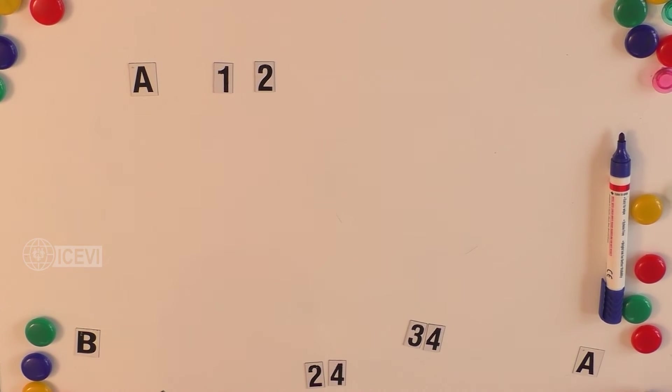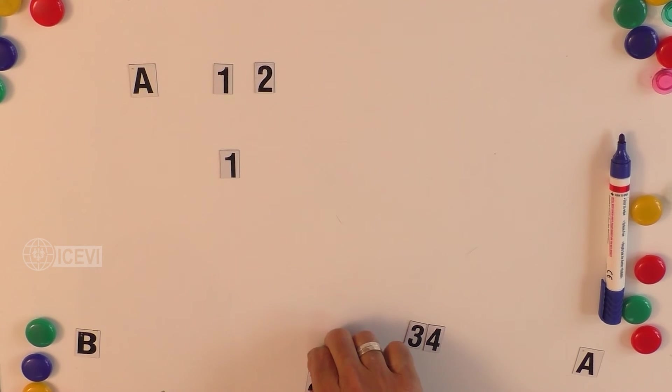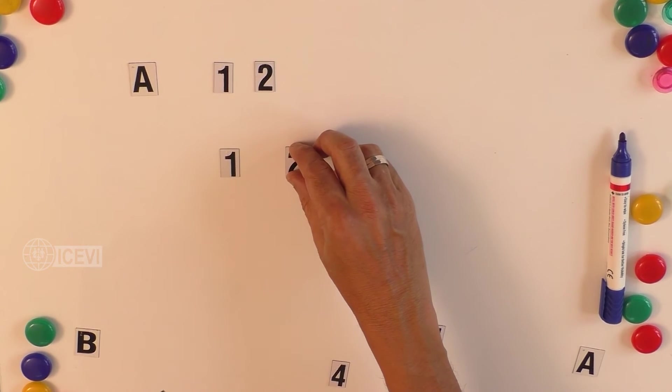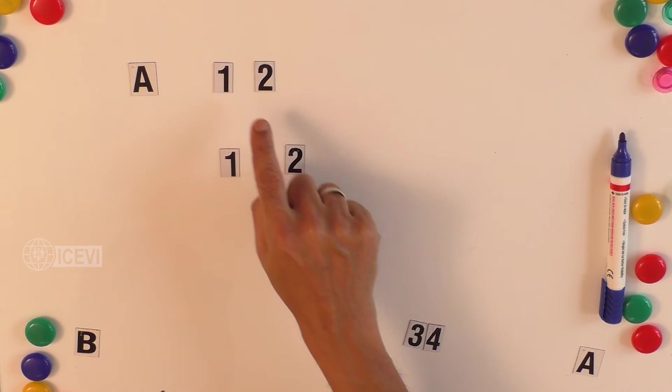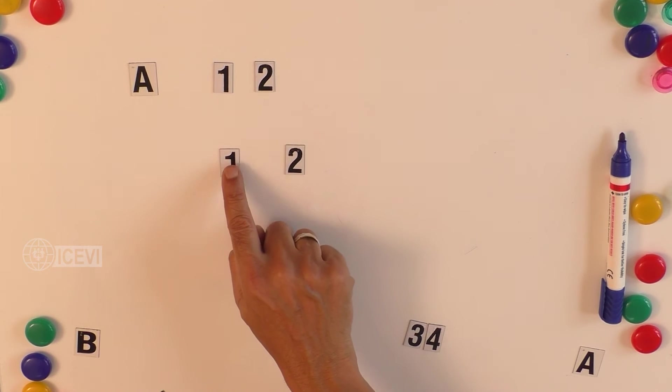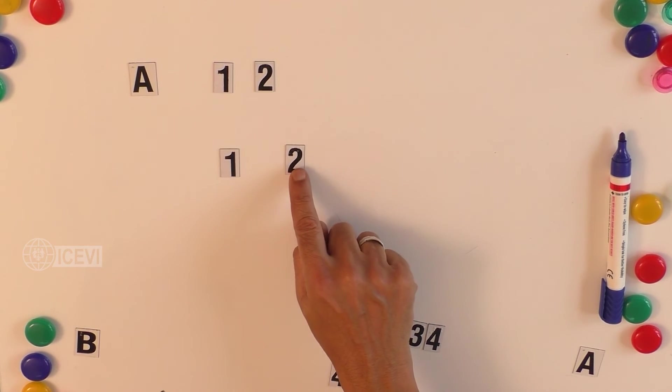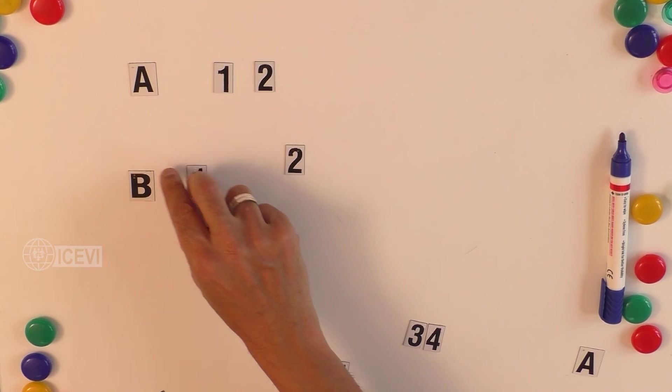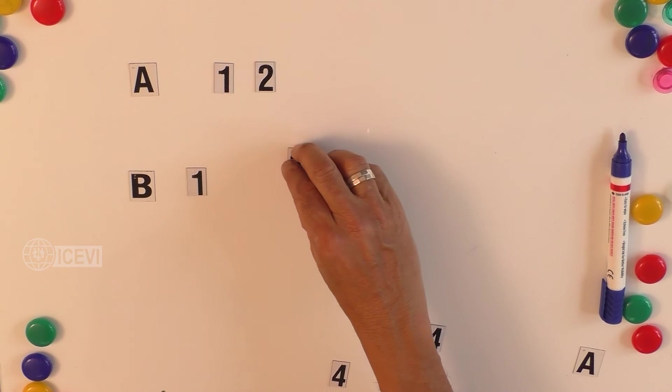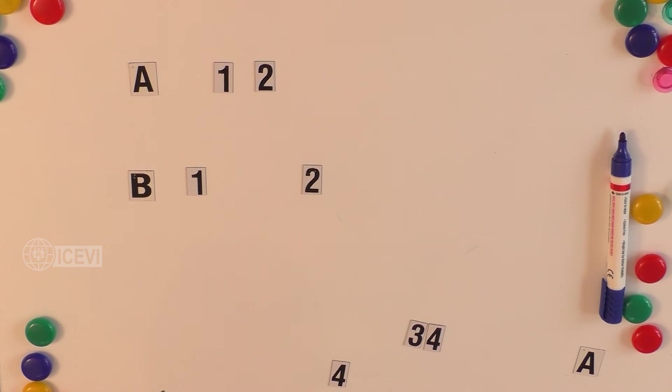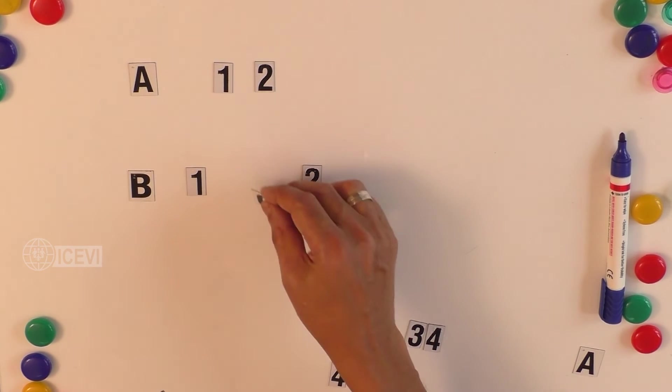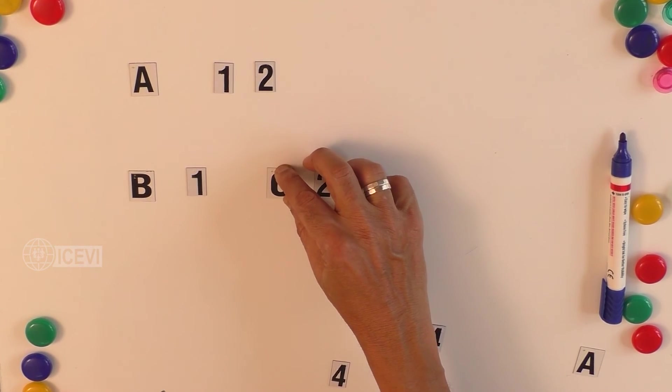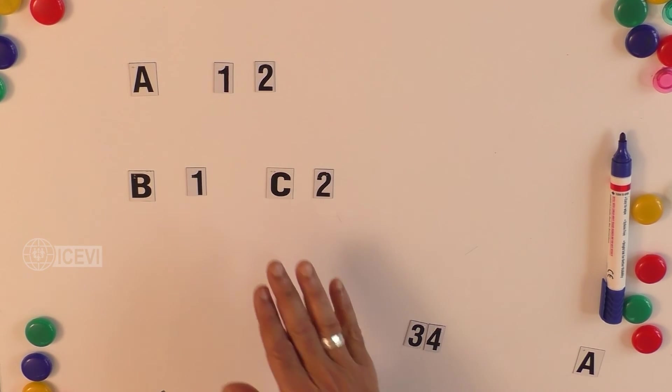One subset is 1 itself, another subset is 2 itself, because 1 belongs to set A, 2 belongs to set A. So 1 is a subset of A, 2 is a subset of A. Suppose we say B is a set with object 1, and let us consider C as a set with object 2.